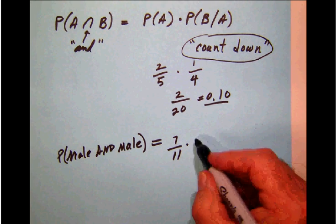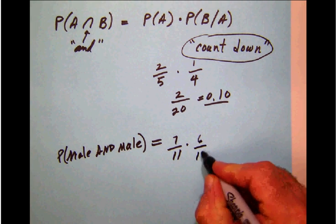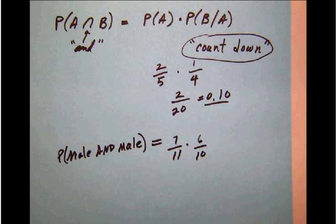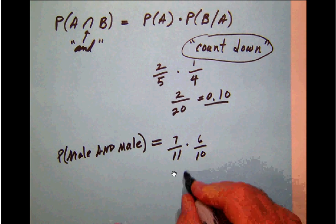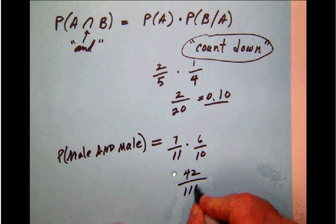We're going to assume, even though we've drawn this randomly, that we did in fact get what we wanted. So we call this the countdown kind. We are going to have 6 out of 10. We'll count down from 7 to 6, we'll count down from 11 to 10.